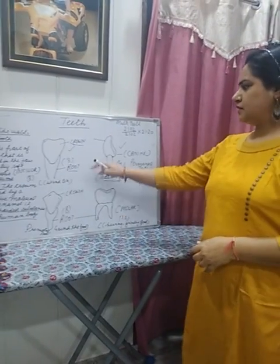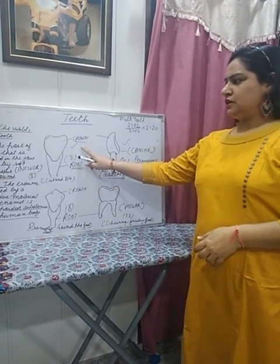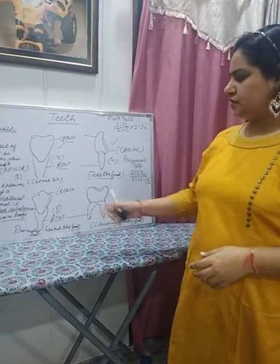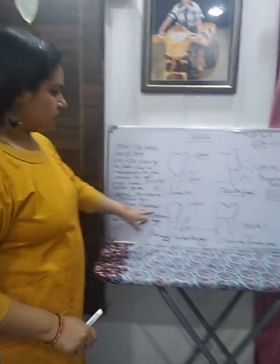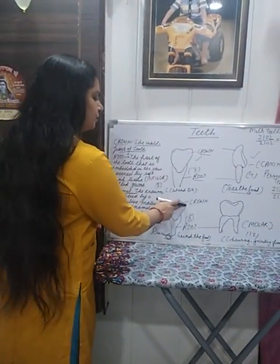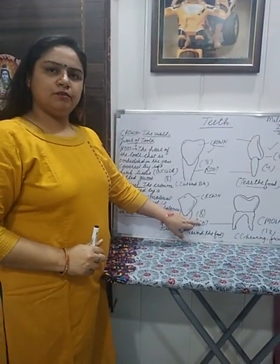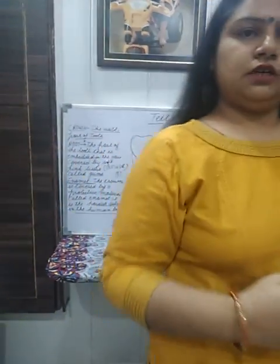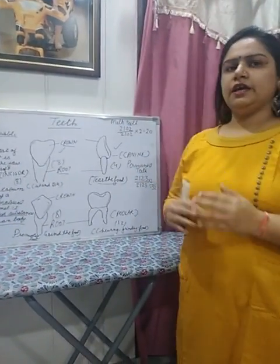In an earlier video we discussed the incisors and canines. In this video we will discuss the premolar teeth. These teeth are broad with a flattened top and they are 8 in number — 4 in each jaw, 4 in the upper jaw and 4 in the lower jaw. The function of the premolars is to help us grind the food.